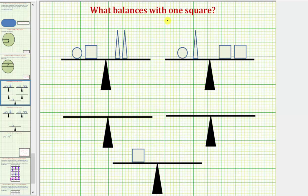In this question we're asked, what balances with one square, shown here on the bottom? We're given that one circle and one square balances with two triangles, and one circle and one triangle balances with two squares.